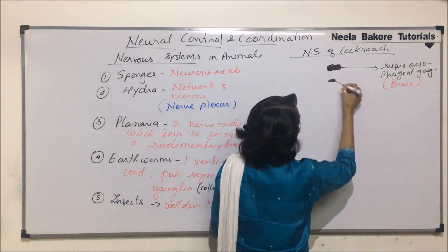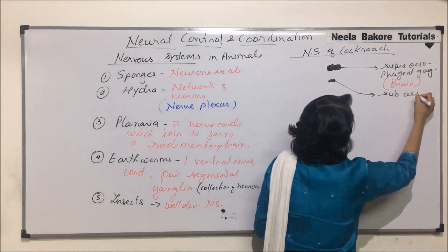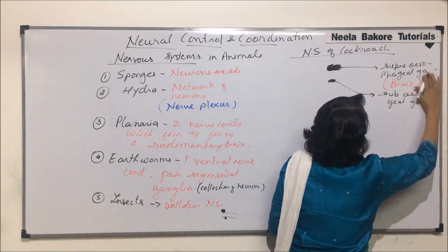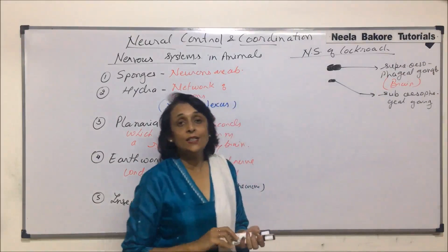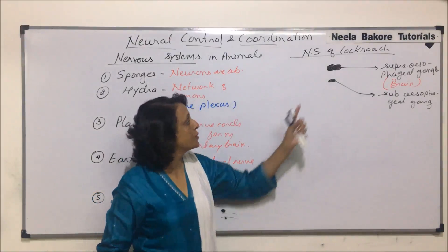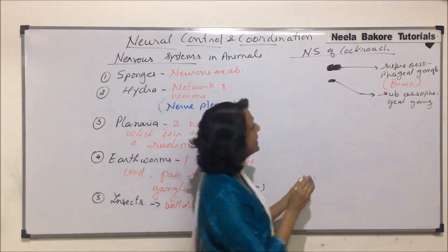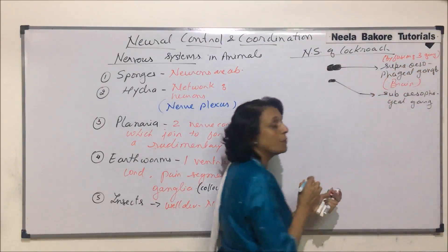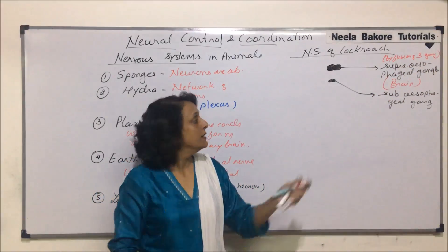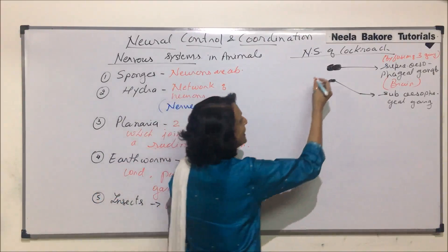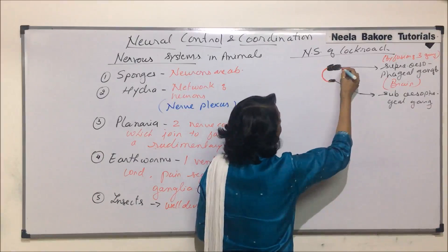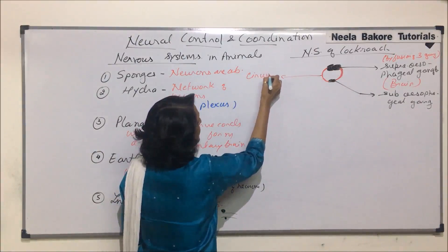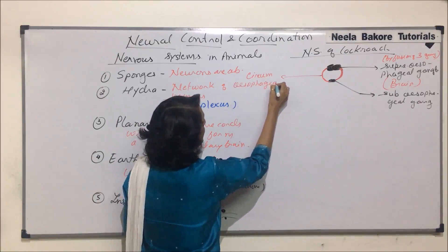Below the esophagus there is a smaller ganglion, known as the sub-esophageal ganglion. The one above the esophagus is the larger supra-esophageal ganglion, formed by fusion of three ganglia. These two are connected by a paired connection known as the circum-esophageal commissures, which connect the upper and lower ganglia.